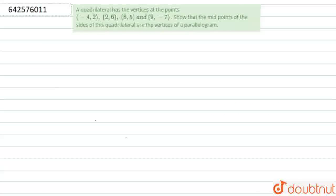Hello students. The question here is: a quadrilateral has vertices at the points (-4, 2), (2, 6), (8, 5), and (9, 7). Show that the midpoints of the sides of the quadrilateral are the vertices of a parallelogram.